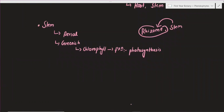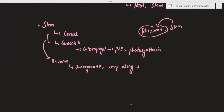The rhizome is underground and can be found under the soil surface. The rhizome can be creeping along the soil surface, showing horizontal growth.